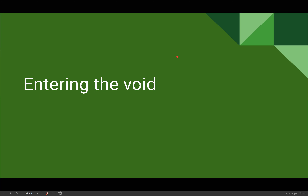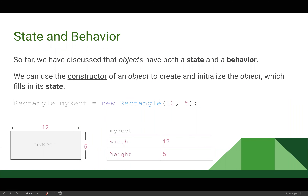Today we are going to be entering the void. Thus far in our unit we have discussed that objects are created with both a state and a behavior. We can use the constructor of an object to both create and initialize it, which fills in the object's state. If I make a rectangle object called myRect and initialize it with a width of 12 and a height of 5, I get that rectangle object with its state.